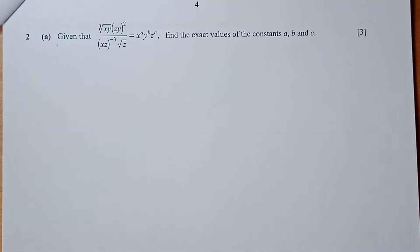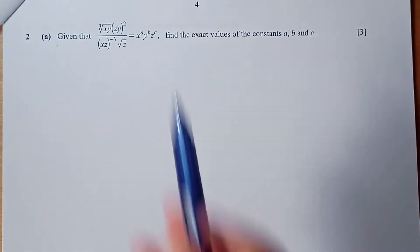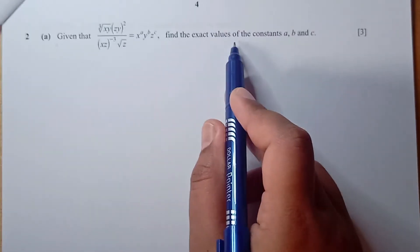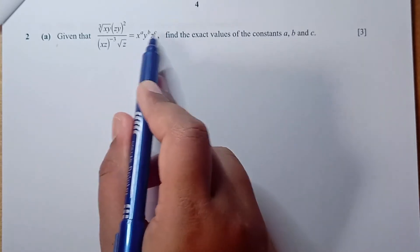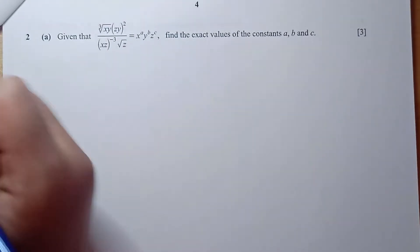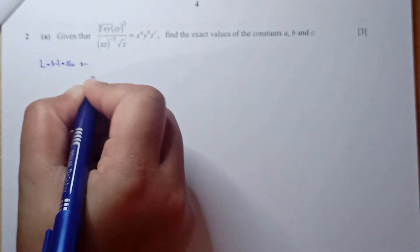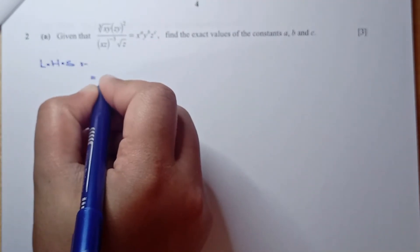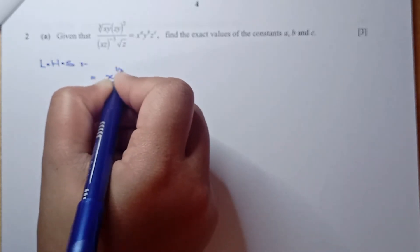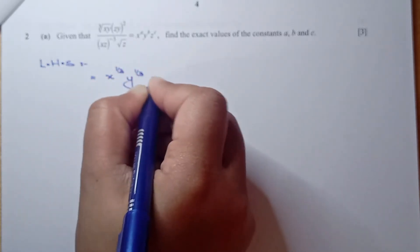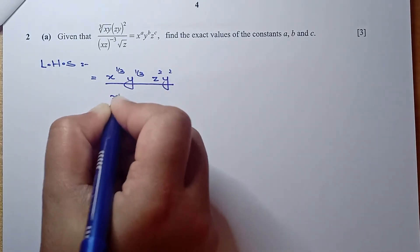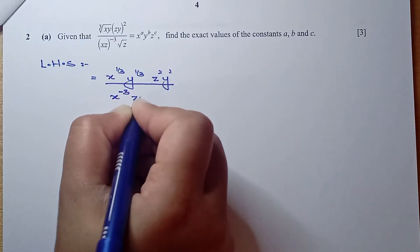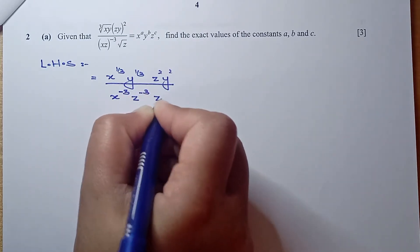Now for question number 2, part a: given that this expression equals this, find the exact values of constants a, b, c. We use the left-hand side: x to the power 1/3, y to the power 1/3, z squared, y squared, over x to the power minus 3, z to the power minus 3, and z to the power 1/2. We shift all terms into the numerator.